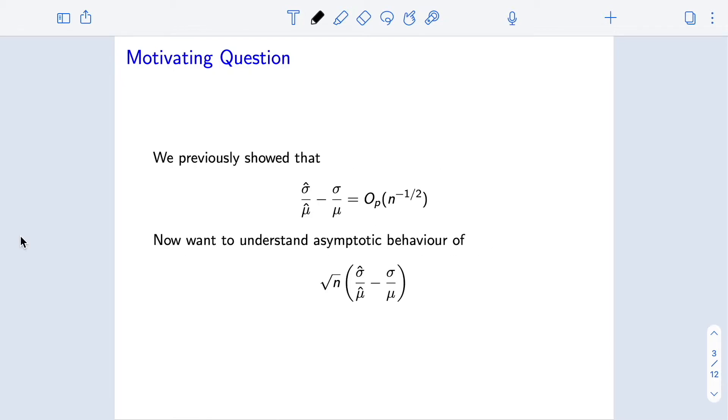As a reminder, we had previously shown that the estimator sigma hat over mu hat was consistent for sigma over mu, and had a convergence rate of no slower than n to the negative one-half. Now, if we scale this difference up by square root of n, we might be curious about what the asymptotic behavior of our estimator minus truth is. In particular, we might hope that this has some sort of asymptotic normal distribution with mean zero and some variance that ideally we can characterize.